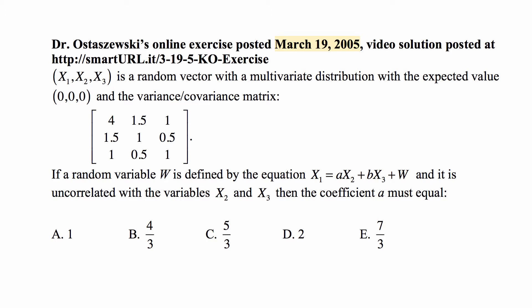So we have a random vector consisting of random variables X1, X2, X3. They have a multivariate distribution with the expected value 0, 0, 0. So each one of them has expected value of 0 and the variance covariance matrix that you see here.